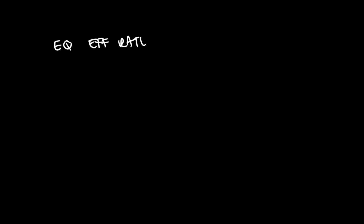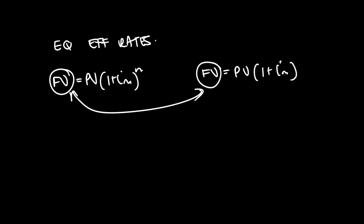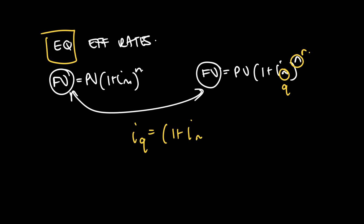As a reminder, when we're looking for equivalent effective interest rates, we looked at the idea that the future value in our formulas would be the same. So we had PV(1 + iM)^N in both cases, but M and N are different, so we labeled them Q and R. We said the future values will be the same because we want the interest rate to produce the same future value — that's where equivalent comes into play. Then we solved for the formula: iQ is equal to (1 + iM)^(M/Q) minus 1.